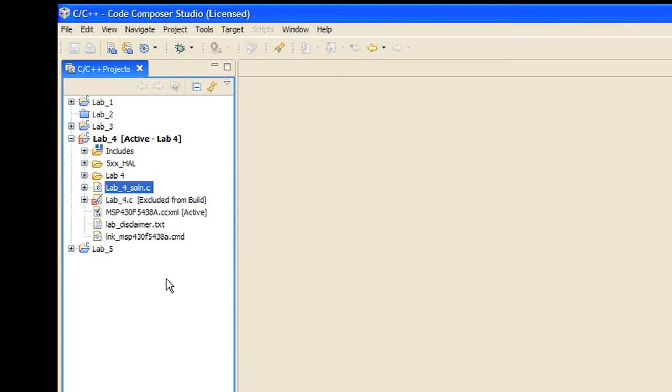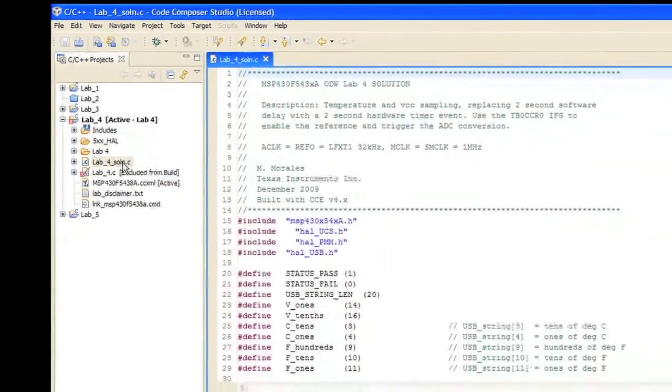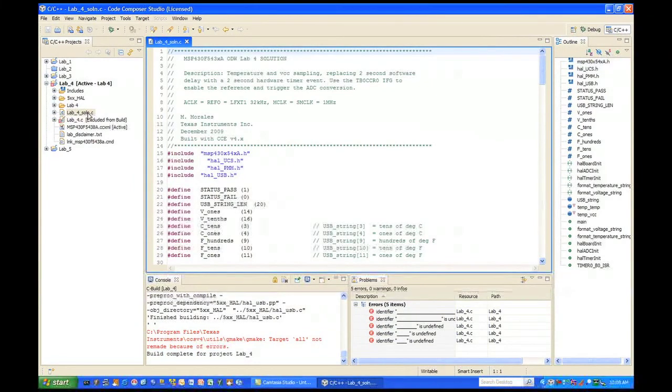So at this point, we can close any of the other open editor panes that you had, and open the Lab 4.c solution file for editing. Take a look through the code as shown below in step 3.